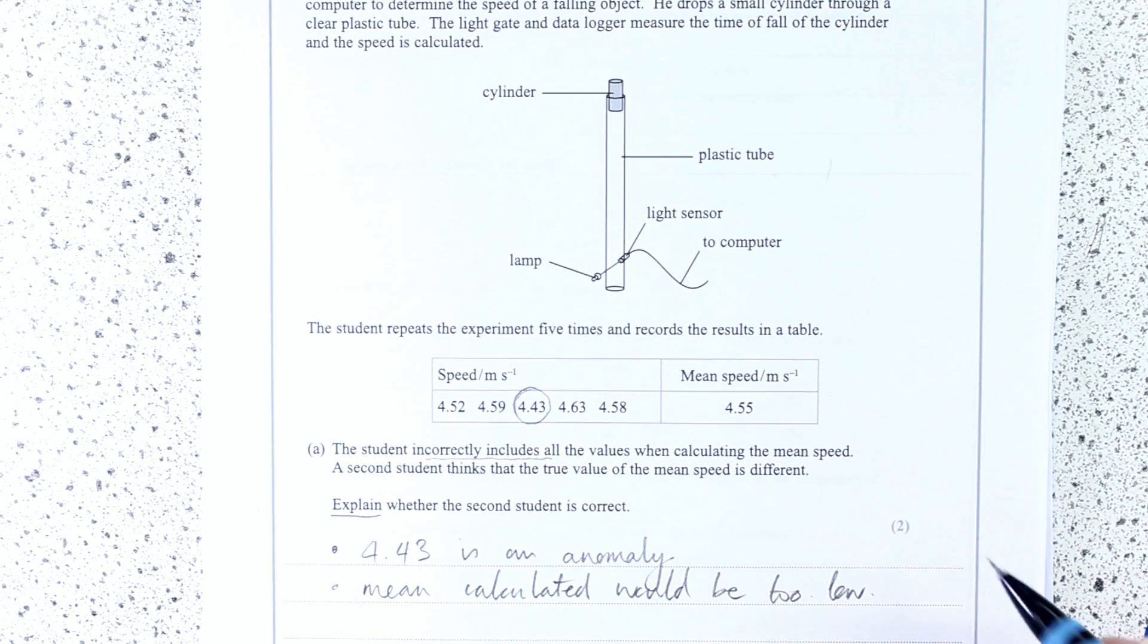Now most of my students when they've done this, they've actually just gone ahead and calculated the mean of those four results and given that, and that I think would be equivalent to that if you say the mean is this, which is slightly higher than 4.55.